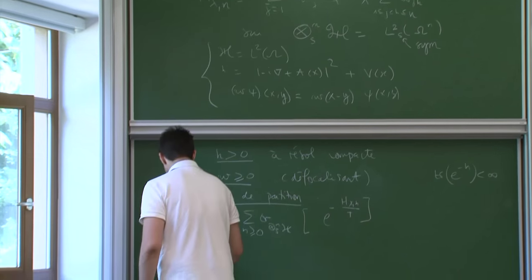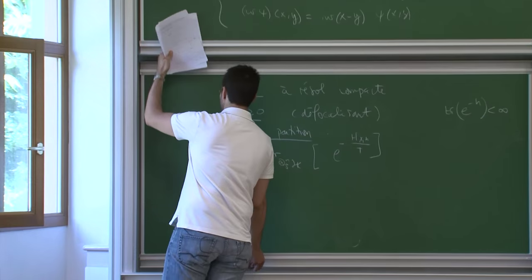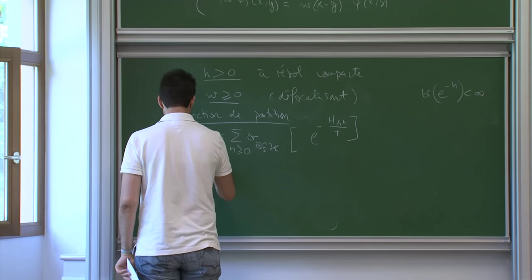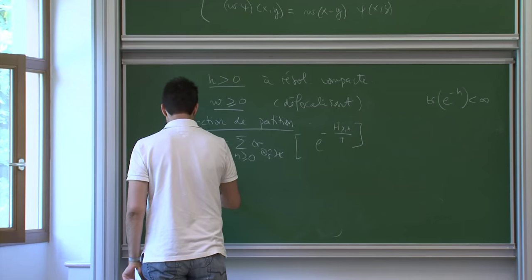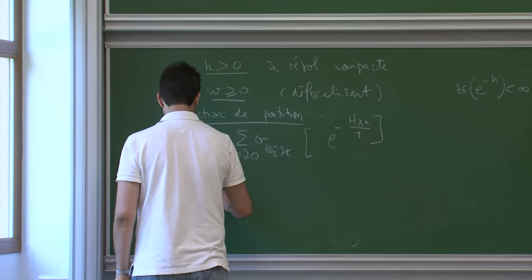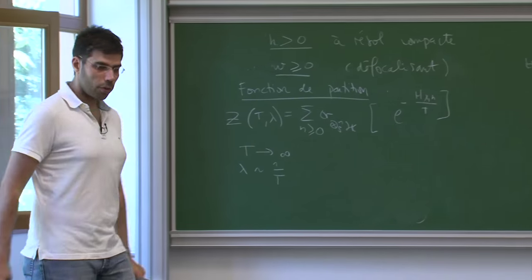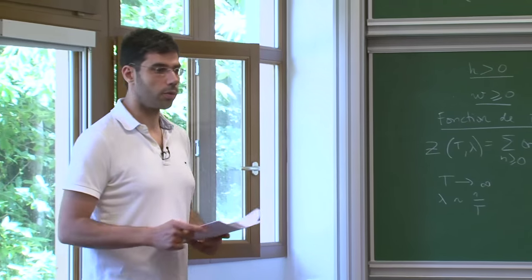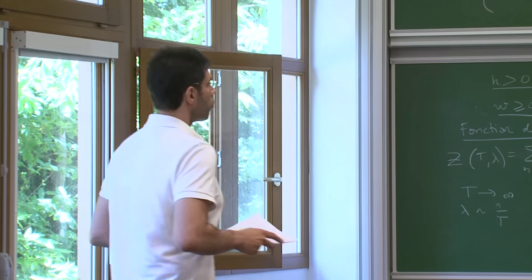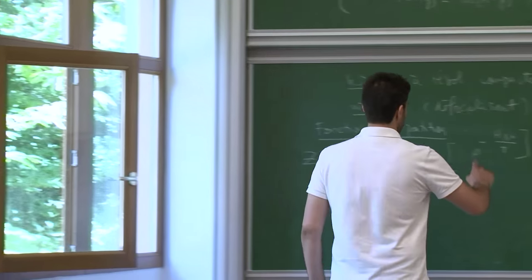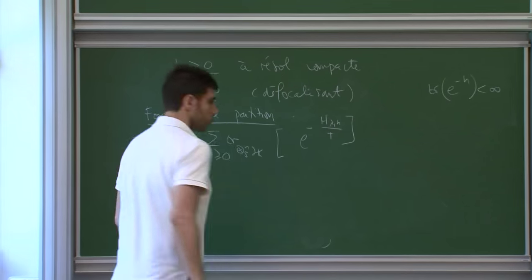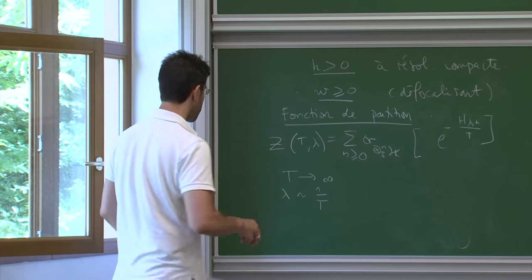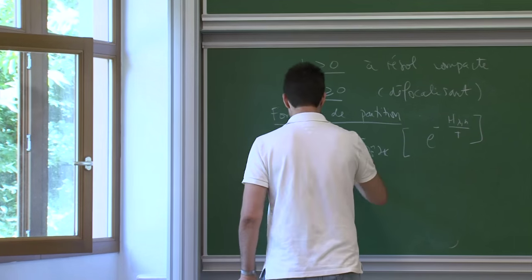La limite de champ moyen consiste à prendre T grand, et λ d'ordre 1/T, puisqu'on veut prendre λ d'ordre 1 sur le nombre moyen de particules. Le nombre moyen de particules se comporte comme T. C'est la limite à laquelle on s'intéresse.